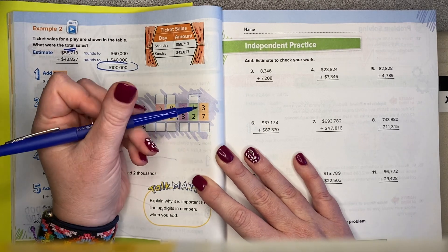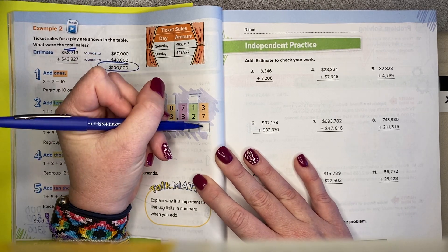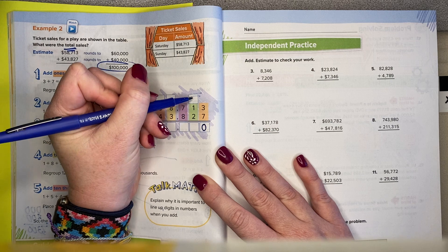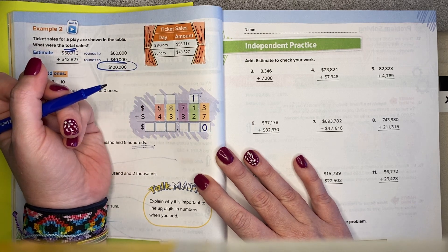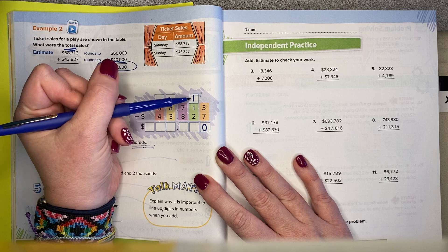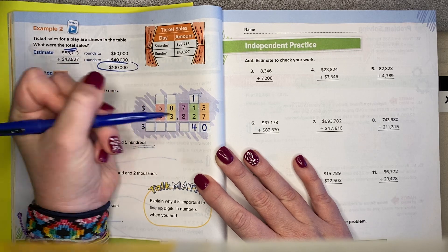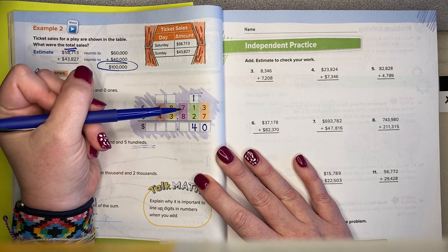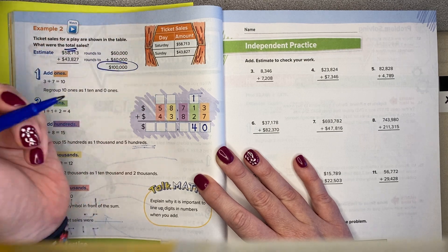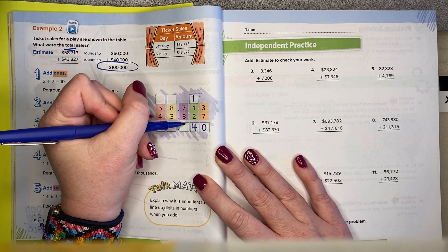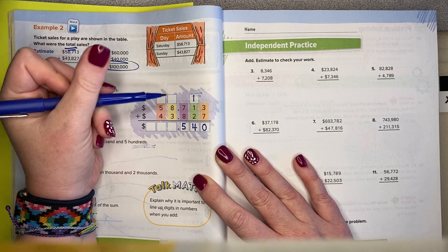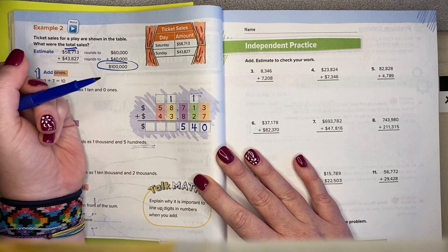I'm going to add my ones. 3 plus 7 is 10. I'm going to keep my 0 from 10 up here and carry or regroup the 1. Now I'm going to say 1 plus 1 plus 2 is 4, so there's nothing to regroup. Then I'm going to say 7 plus 8 is 15. So I write the number in the ones place down here, and I regroup the number in the tens place up there.